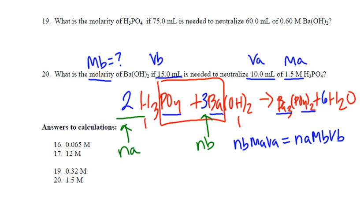One more time. The equation is NB·MA·VA equals NA·MB·VB. So NB, now that I've labeled everything, I can just look it up. It's the number 3 because that's the coefficient of my base. Times the molarity of the acid, I labeled it right up here for you, 1.5. Times the volume of the acid, 10 milliliters.